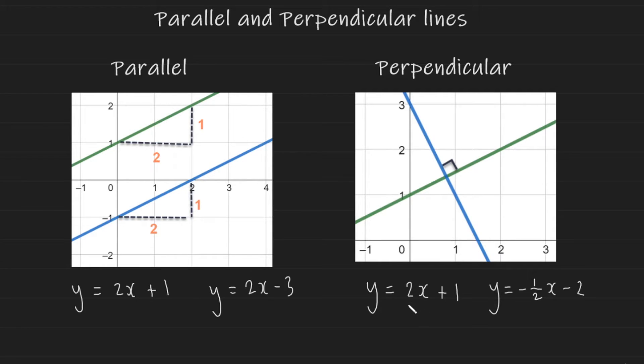So a line perpendicular to this will have a negative gradient, and the numbers will be flipped around. So the denominator will be the numerator now, and the numerator will be the denominator. That's what we mean by the word reciprocal. And it really is that straightforward.